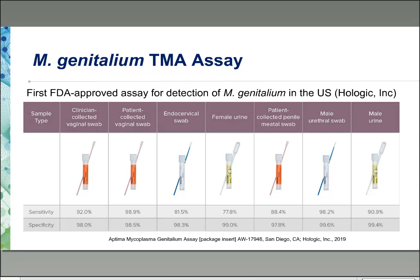The FDA-approved TMA assay can use different specimen types: clinician-collected and self-collected vaginal swabs, clinician-collected endocervical swabs, female and male urine, male urethral swabs, and self-collected penile swabs. For females, the vaginal swab is the preferred specimen type — a patient-collected vaginal swab has ninety-nine percent sensitivity and ninety-nine percent specificity. For males, a urethral swab is ideal with ninety-eight percent sensitivity and nearly one hundred percent specificity.